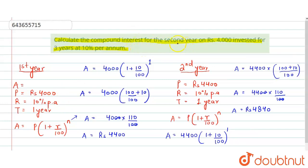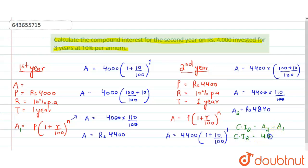Now we need to calculate the compound interest for the second year. Compound interest for the second year equals the amount at the end of the second year (A2) minus the principal at the beginning of the second year (P2), which is the same as the amount at the end of the first year (A1). So CI equals 4840 minus 4400, which gives rupees 440. That is the answer.